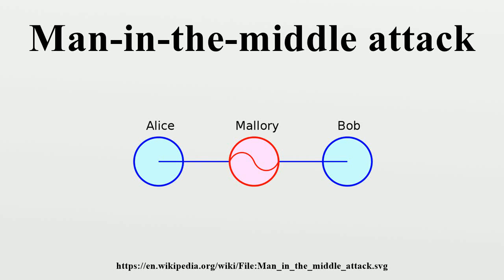In cryptography and computer security, a man-in-the-middle attack is an attack where the attacker secretly relays and possibly alters the communication between two parties who believe they are directly communicating with each other.